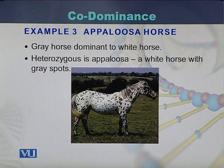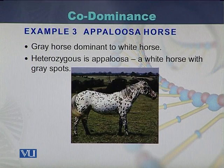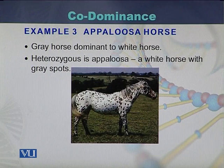A third example involves horses. Gray horse coloring is dominant over white, but if there is a cross between a gray horse and a white horse, we see a third phenotype in the heterozygous condition called appaloosa — a white horse that has gray spots on its skin or fur. This is a phenomenon of codominance in horses.